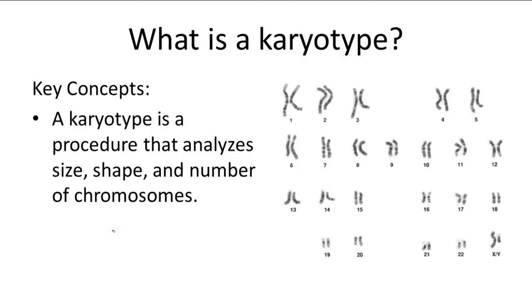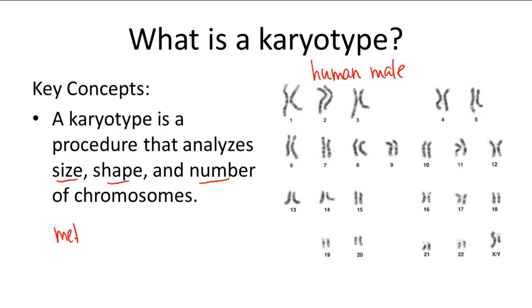A karyotype shows the size, shape, and number of chromosomes in an individual organism. The karyotype shown here is of a normal human male. To create a karyotype, scientists take cells from the individual, grow them in a lab, and then freeze them at metaphase of mitosis.